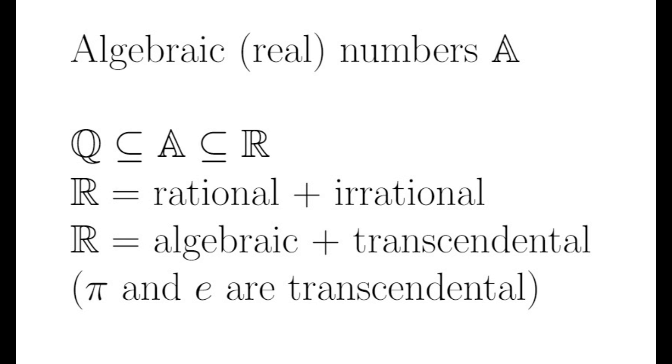Just as the word irrational is used to describe real numbers that are not in Q, we have a term called transcendental numbers, which describes real numbers that are not in A. In other words, real numbers that are not algebraic are called transcendental. Pi and e are famous examples of transcendental numbers.